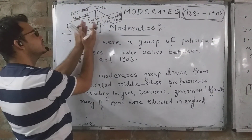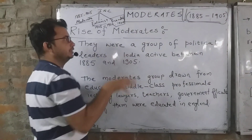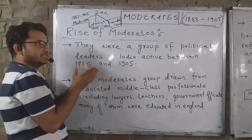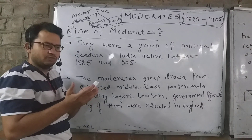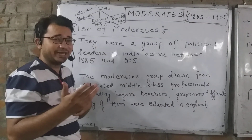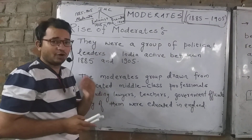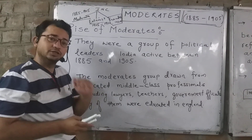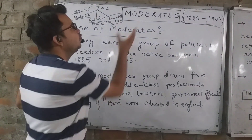In any political party there is an ideology and groups that rule. For example, in BJP there are groups standing with Modi, and in Congress some support Rahul and some support Sonia Gandhi. Similarly, in the initial phase of Congress that was the moderate phase. So who were these moderates?